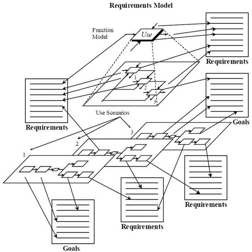There are different types of decomposition defined in computer sciences. In structured programming, algorithmic decomposition breaks a process down into well-defined steps. Structured analysis breaks down a software system from the system context level to system functions and data entities, as described by Tom DeMarco. Object-oriented decomposition, on the other hand, breaks a large system down into progressively smaller classes or objects that are responsible for some part of the problem domain.